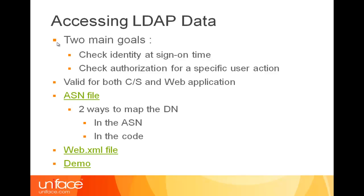LDAP is mainly used for two main goals. One is to check the identity of a person connecting to an application. The other one is to check the authorization, because we can define people with various organizations — for example, authorizing people from FTS to administrate something, people from sales just to read data, and so on. But it's up to you to define that in your LDAP. LDAP can be used for both client-server and web applications. There are two ways to map the distinguished name: either in the ASN file or in the code. We just saw how to map it in the code, but we can also do it in the ASN file.